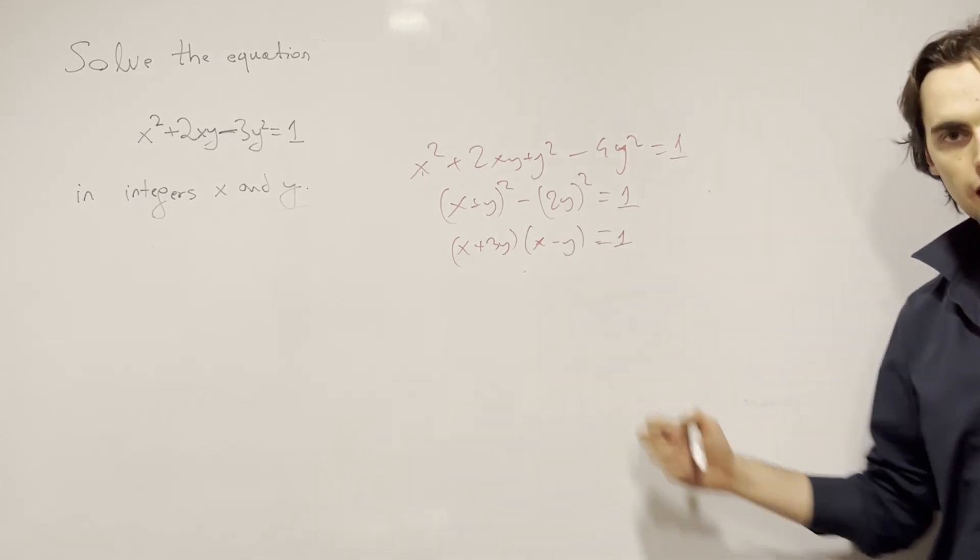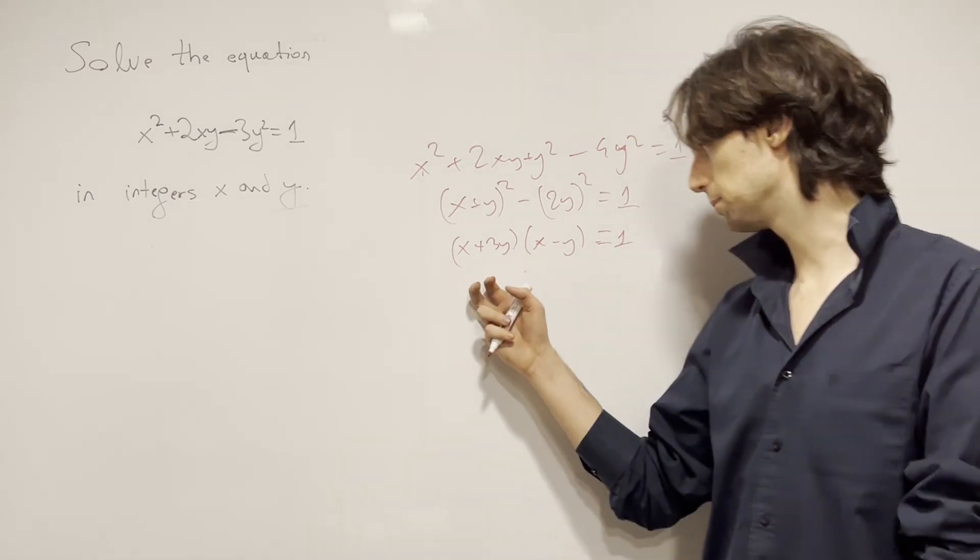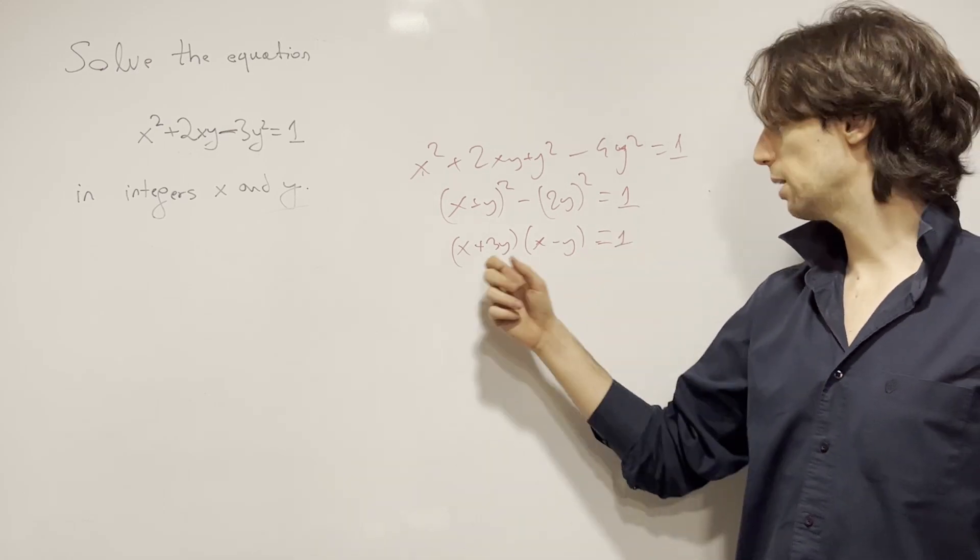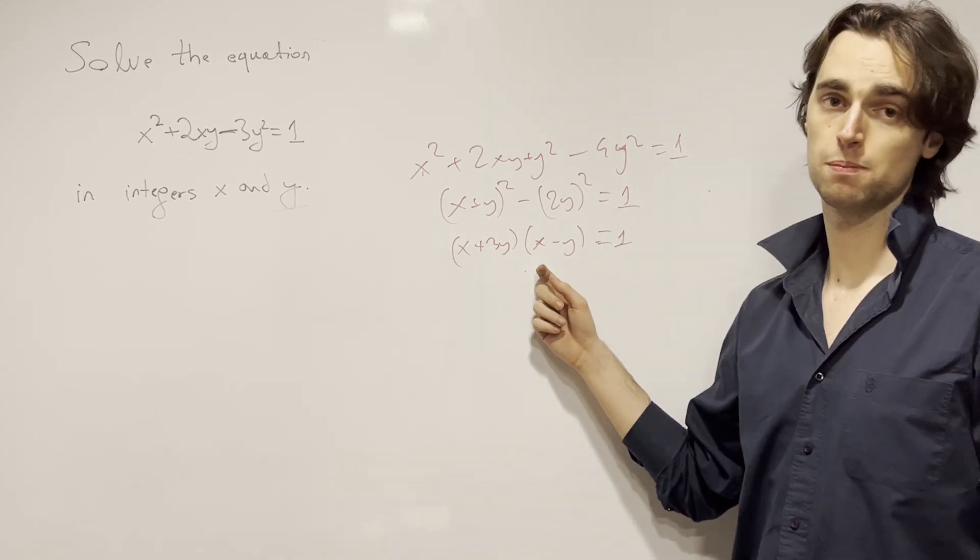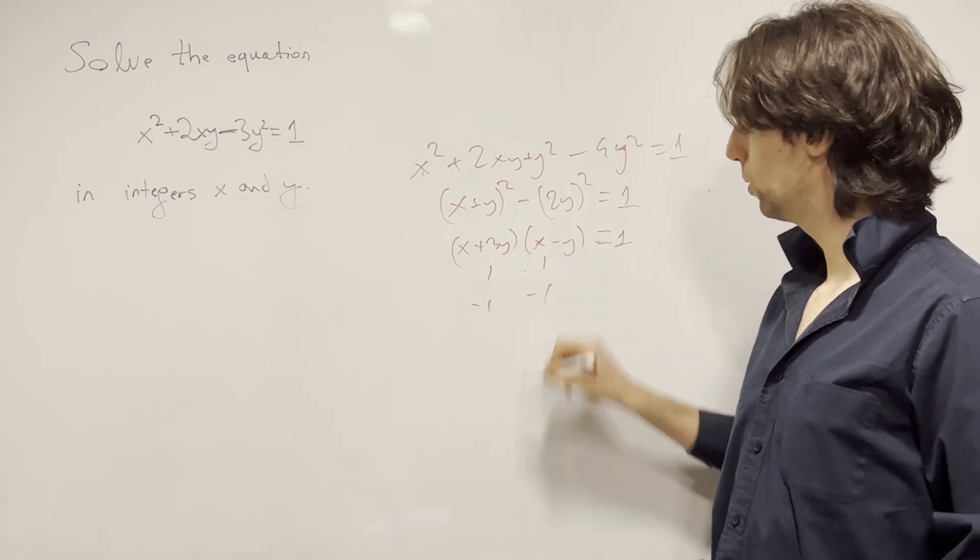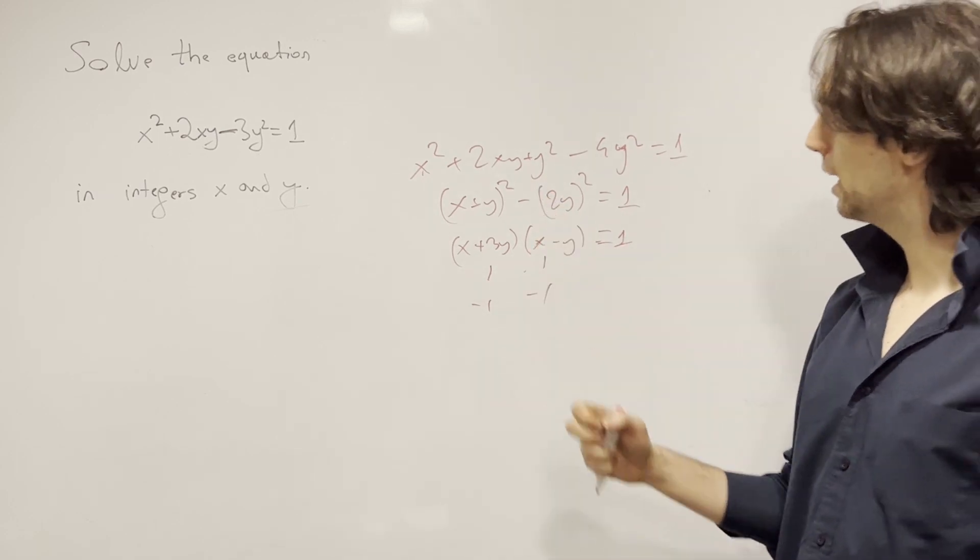And now how do we solve this type of thing? Well, we have these two, x and y are integers, so x + 3y and x - y are also integers. Their product is 1. What does that make these two numbers? Well, it either makes them 1 and 1, or negative 1 and negative 1. Don't forget negatives when you're doing these cases in the integers.